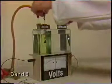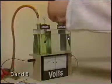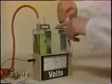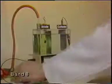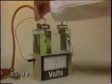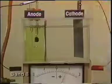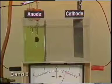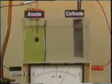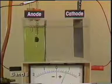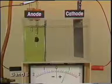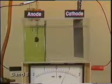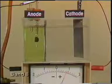Let's now disconnect the electrodes and measure the potential again. The present value is 0.8 volts, lower than the original value of about 1 volt. As we'd expect, operation of the cell has lowered the cell potential.